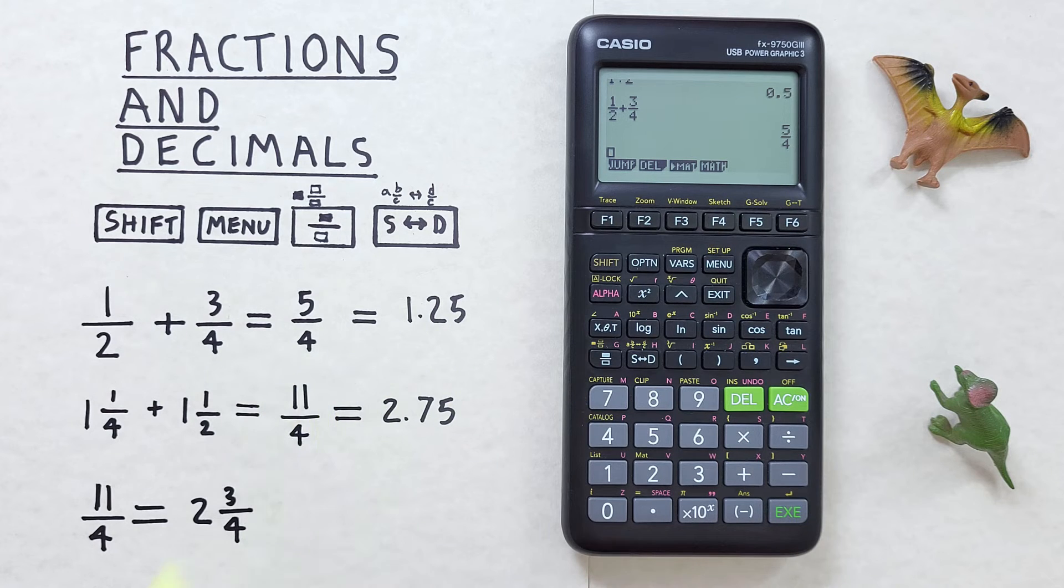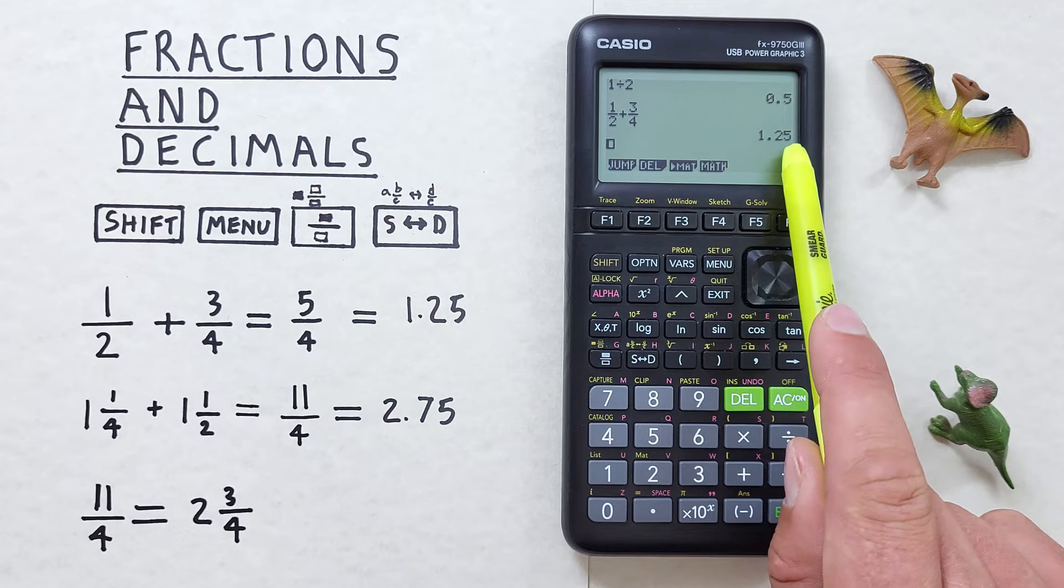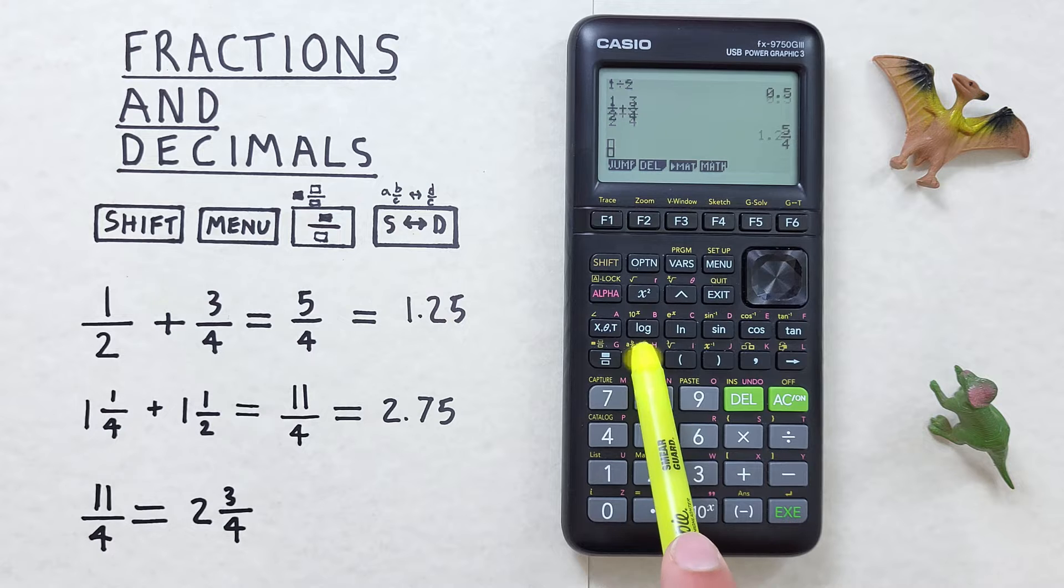We press EXE and we get 5 over 4 as our result. If we want that as a decimal we press the S to D key and we get 1.25, and we can convert back and forth with the S to D key if we want.